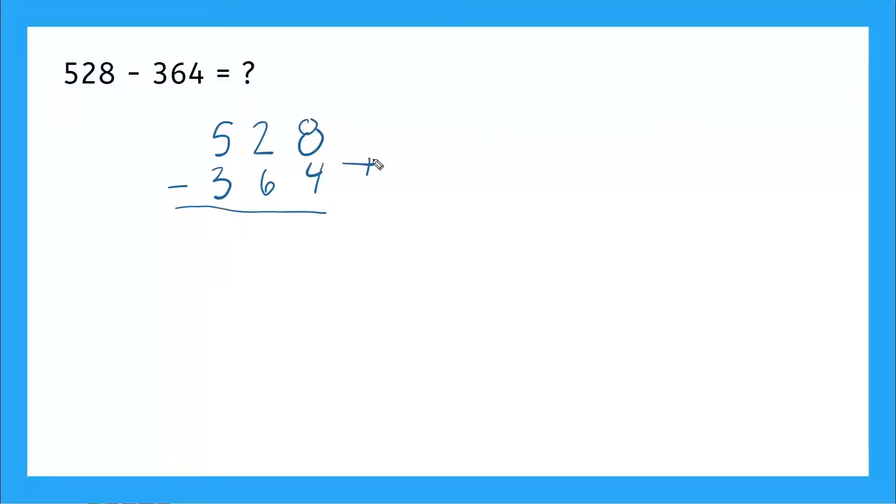But let's write this out again in expanded form. So this is saying 500 plus 20 plus 8, all minus 300 plus 60 plus 4. Okay. So let's start here. We're subtracting from our ones column first. So we have 8 minus, remember our subtraction sign is over here, 8 minus 4. That gives me 4. Perfect.